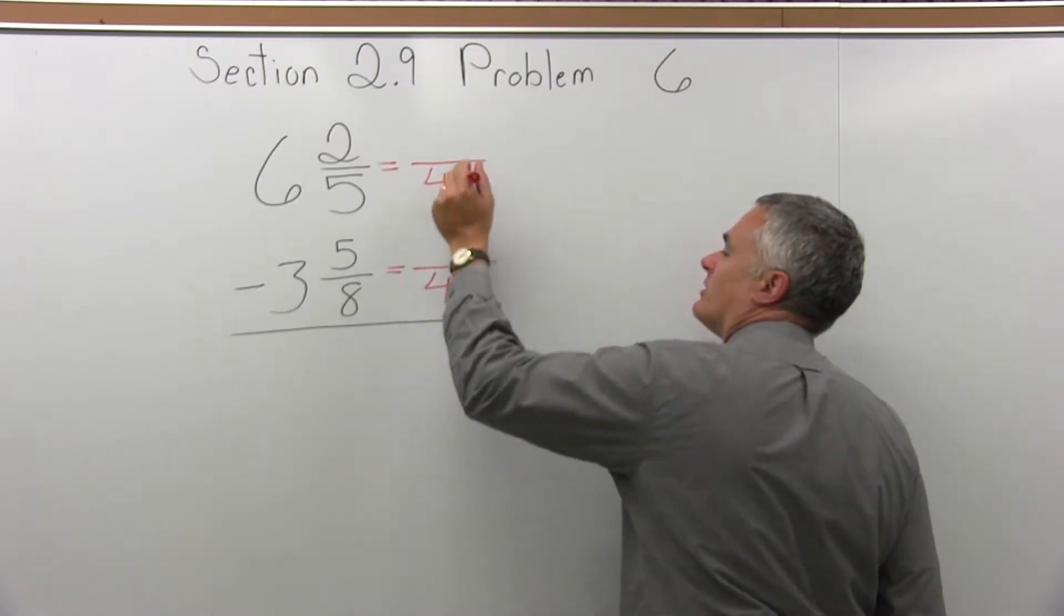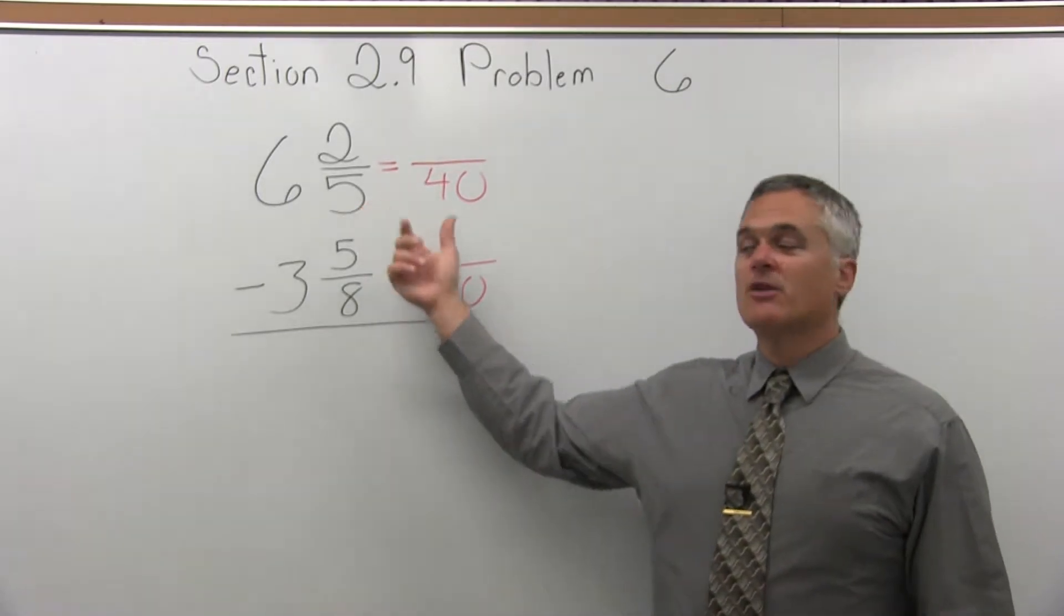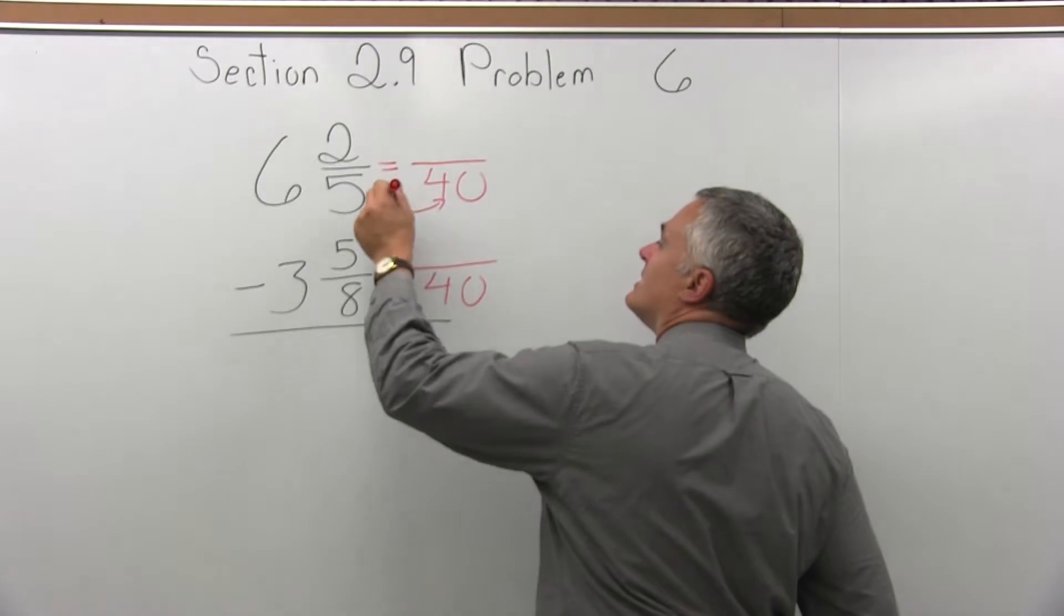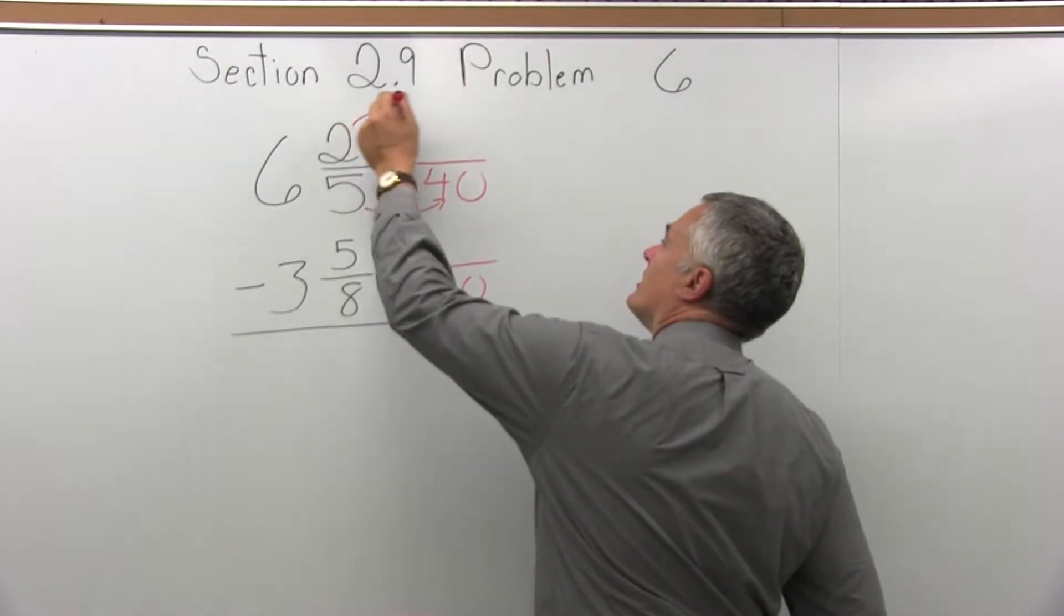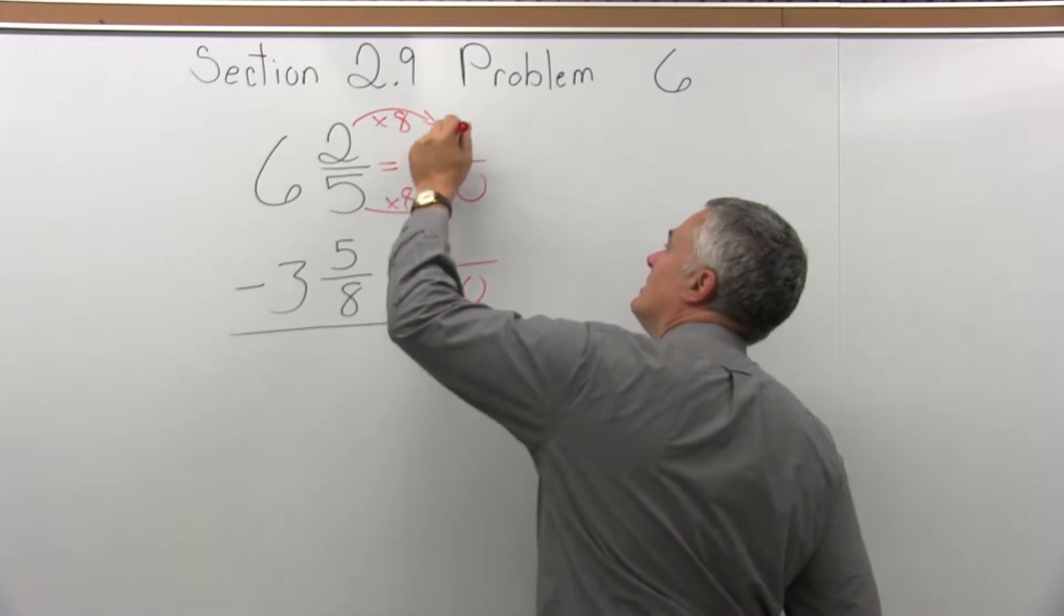Let's find the numerators. For the upper fraction, 5 times some value made 40, so it must have been times 8. So the numerator must get multiplied times the same value, times 8. 2 times 8 is 16.